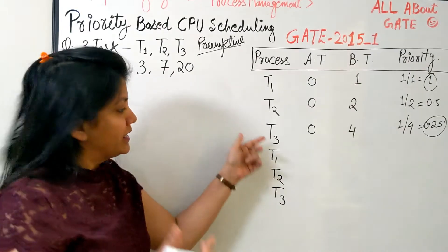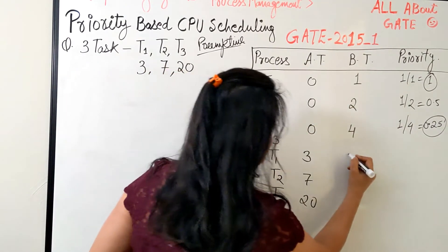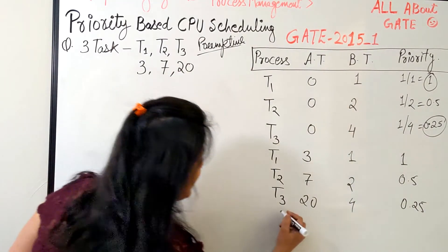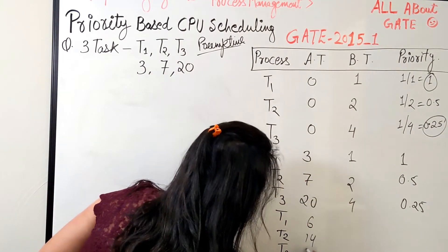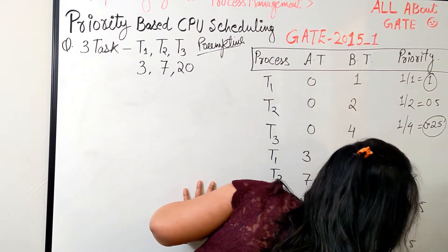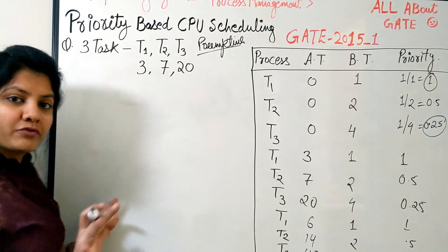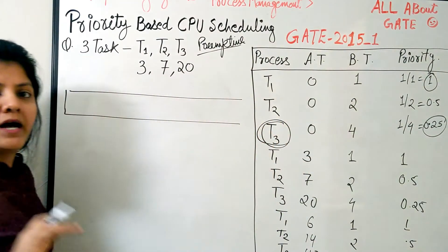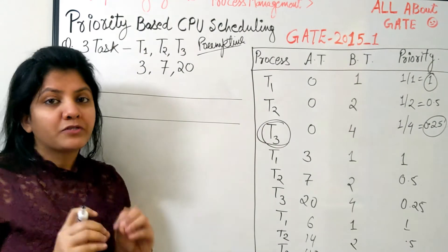The periods are: T1 at 0, 3, 6, 9, 12...; T2 at 0, 7, 14...; T3 at 0, 20, 40... The execution bursts are: T1=1, T2=2, T3=4. Priorities remain 1, 0.5, and 0.25 for each instance. We need to find the completion time for the first instance of T3. Let's start scheduling using the preemptive priority-based approach.